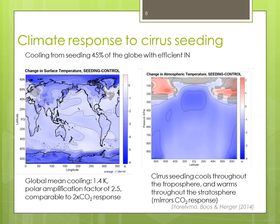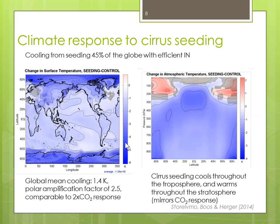Going deeper into the climate response, you can see the surface cooling achievable with this cirrus seeding. There's a strong polar amplification: the ratio of high latitude to global cooling is 2.5, which is actually very similar to the polar amplification seen from greenhouse warming. In that sense, this is probably a better compensation for CO2 warming than some SRM techniques that tend to overcool the tropics and undercool the high latitudes.